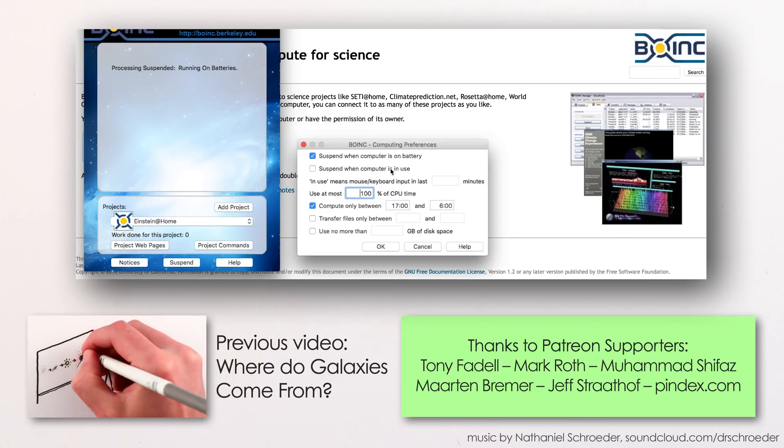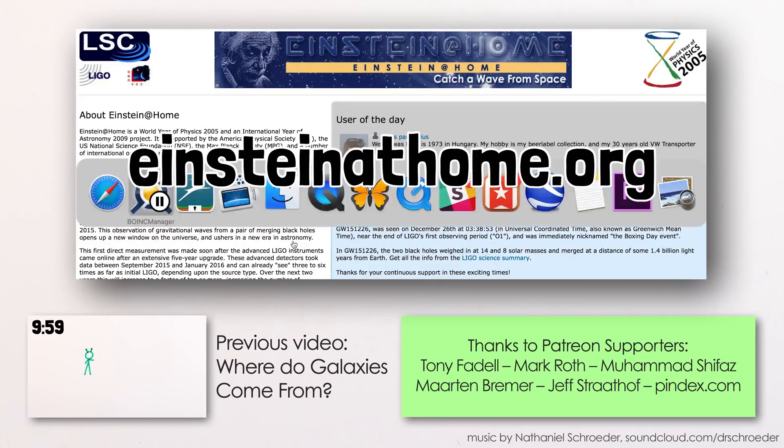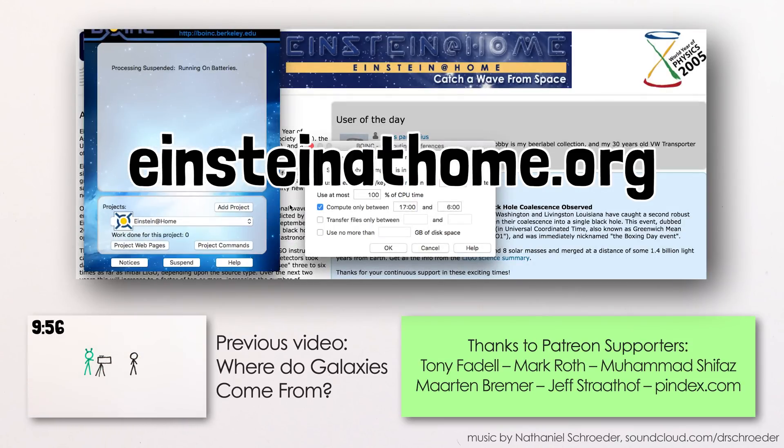I have mine set up to run overnight if I'm not using my computer. You just need to go to einsteinathome.org to download the software and get started. Maybe your computer will help detect the first gravitational waves from a spinning neutron star.